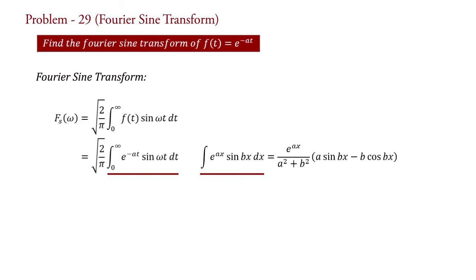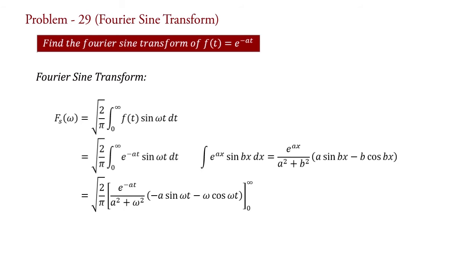we can write Fs(omega) equal to square root of 2 upon pi, into bracket e raised to minus a t upon (a squared plus omega squared), into bracket minus a sine(omega t) minus omega cos(omega t), evaluated over the limit 0 to infinity.